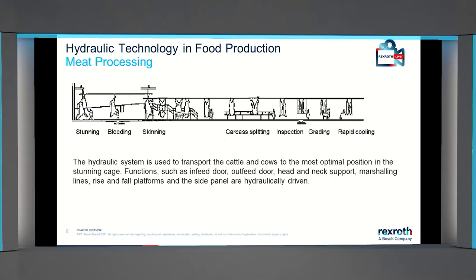In meat processing, hydraulic systems are well used. They are used to transport cattle to the most optimal position in the standing cage. They also support the processes of cleaning, skinning, and cut-case cleaning. Functions such as the in-feed trough, in-feed door, out-feed door, the Rise M4 platform, and measuring lines are all driven by the hydraulic system.